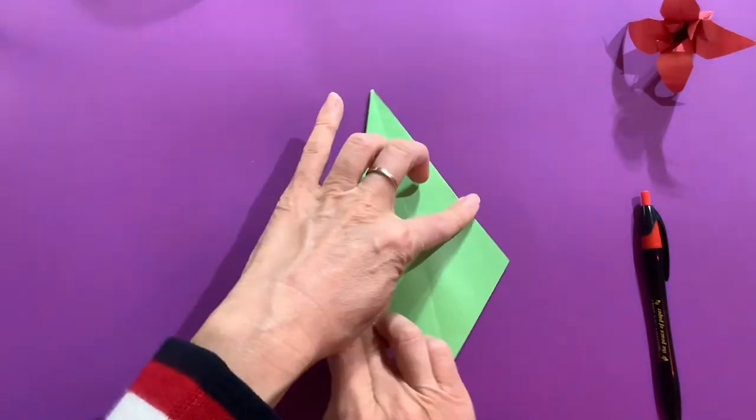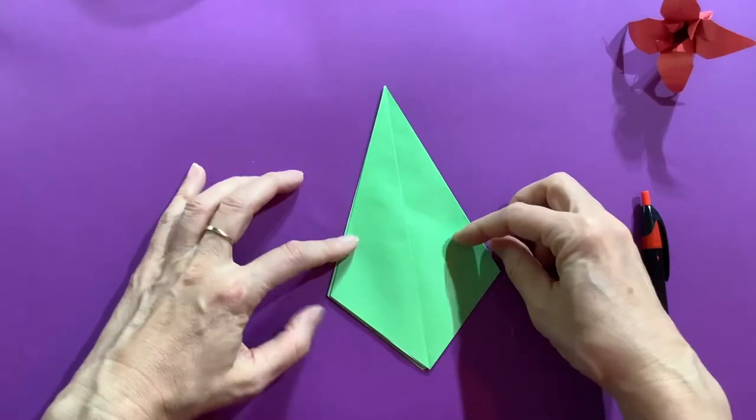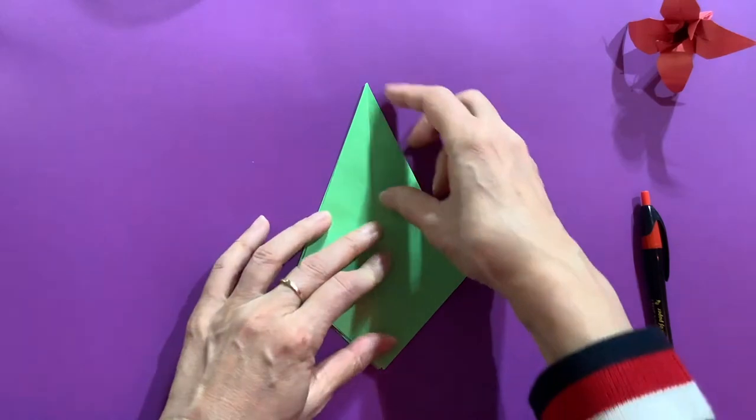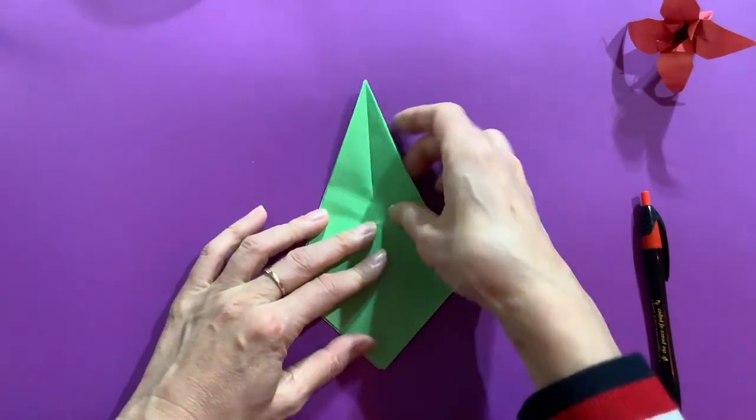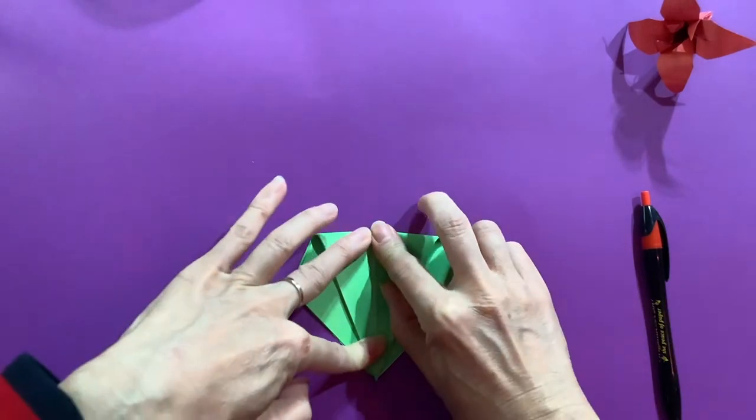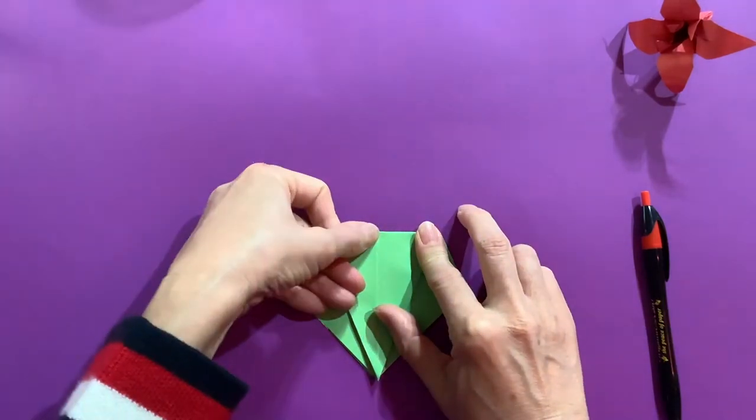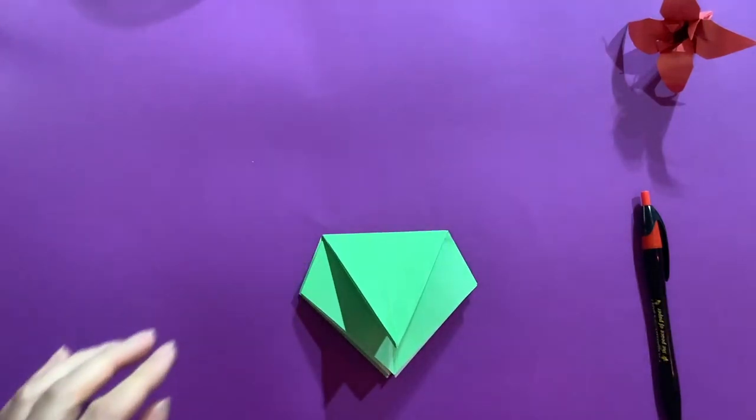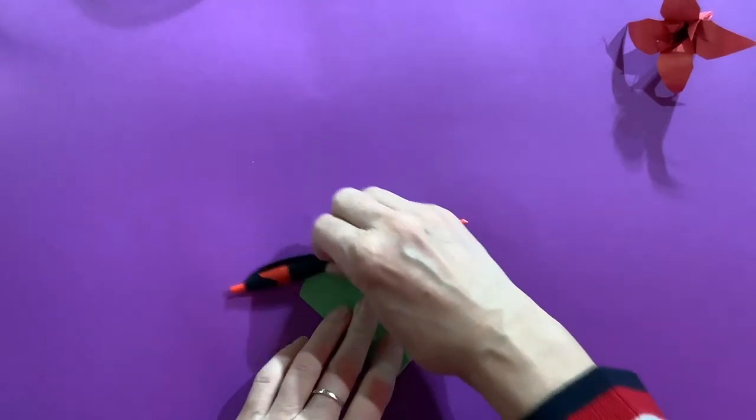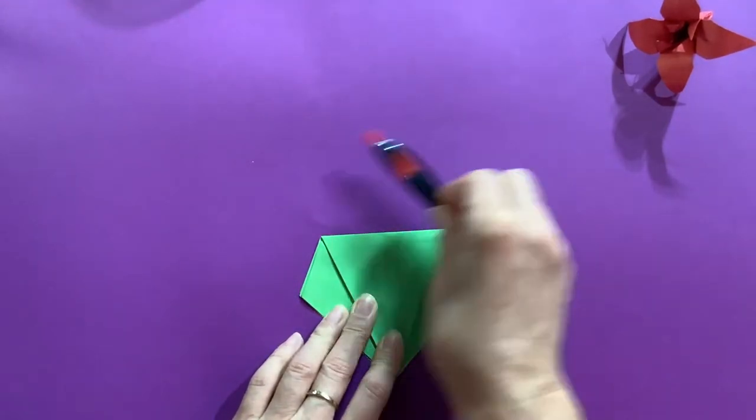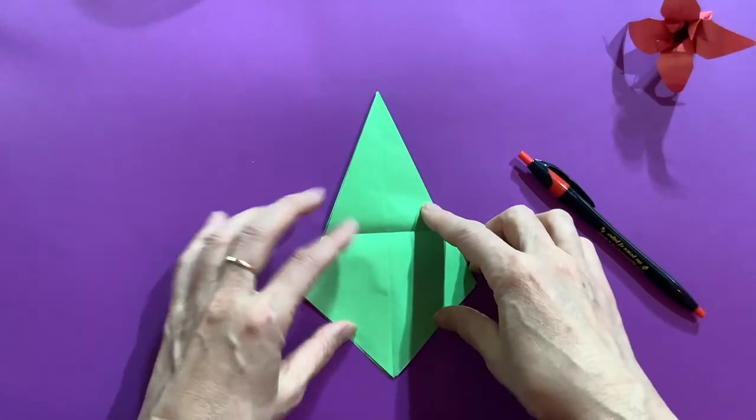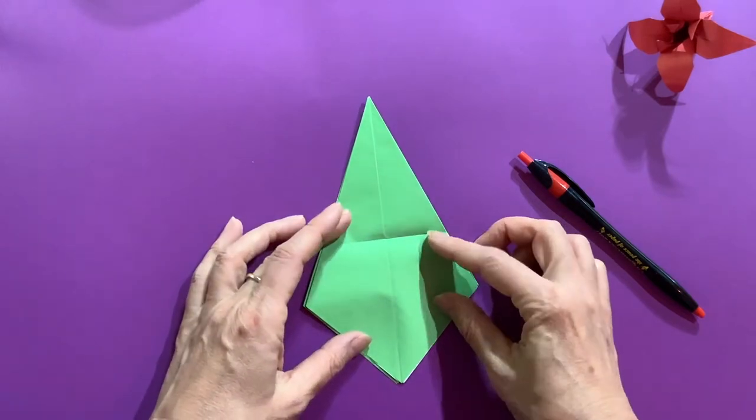And I'm going to turn upside down just to make it easy for me. Because I guess I'm used to this way. And top fold it to the bottom. And make sharp crease. I will use my pen to make it really sharp. And unfold that. Then you are ready for the next move.